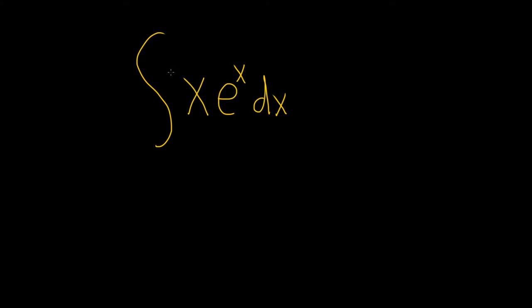So the formula for integration by parts is the following. If we have the integral of u dv, this is equal to uv minus the integral of v du.